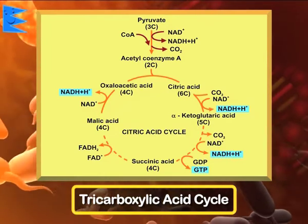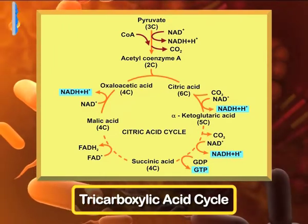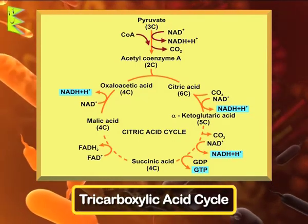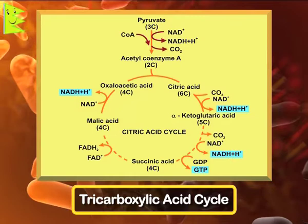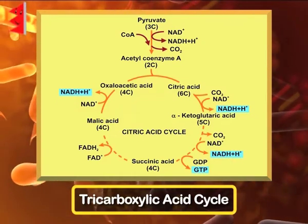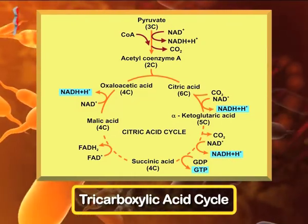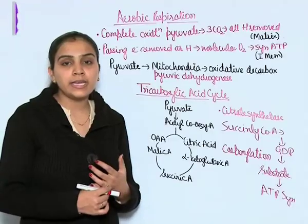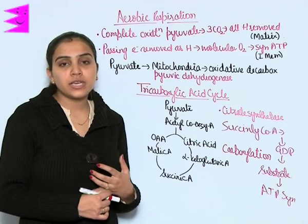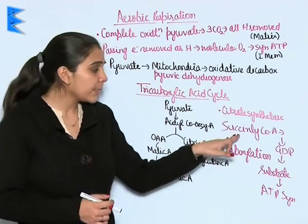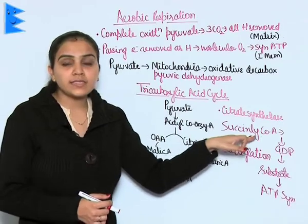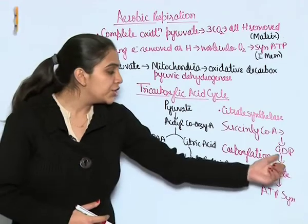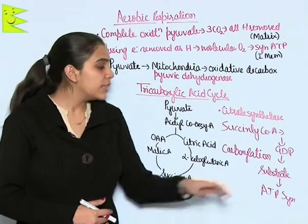Acetyl coenzyme A condenses to give oxaloacetic acid, which gives us citric acid — citrate synthetase is the enzyme responsible for this. It then gets converted into alpha-ketoglutaric acid, then to succinic acid, then malic acid, and again back to oxaloacetic acid. You can see how NADH and NADPH are being utilized and converted throughout this cycle.